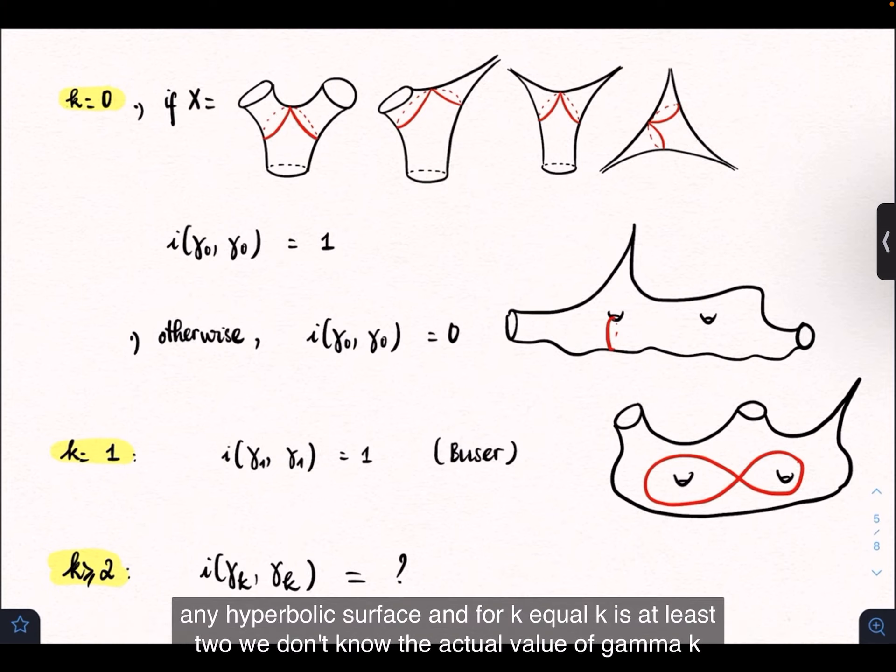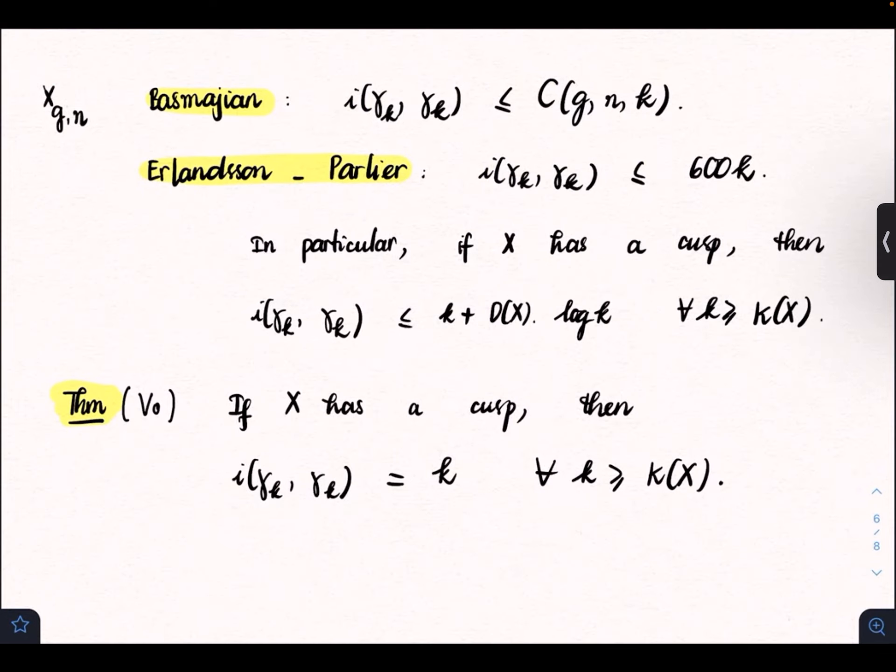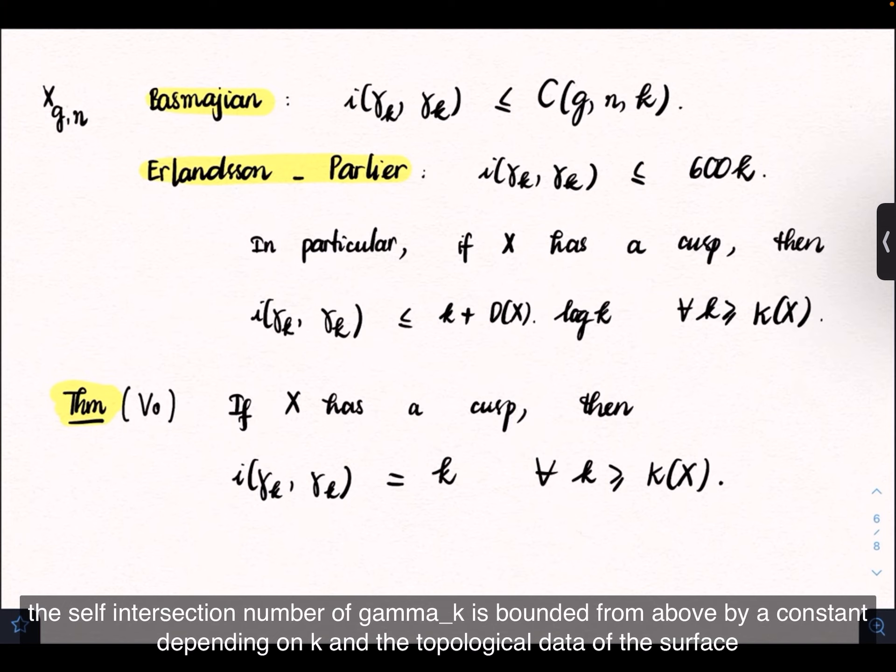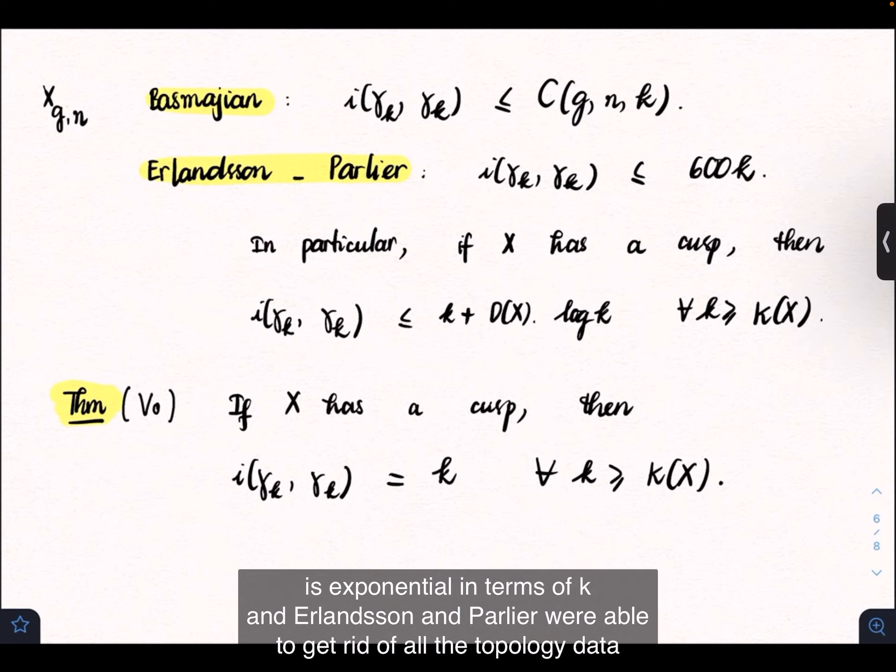For K at least two, we don't know the actual value of gamma_K. However, we do know some upper bounds. The first upper bound was given by Basmajian. He proved that the self-intersection number of gamma_K is bounded from above by a constant depending on K and the topological data of the surface. If we compute this constant explicitly, we see that it is exponential in terms of K.